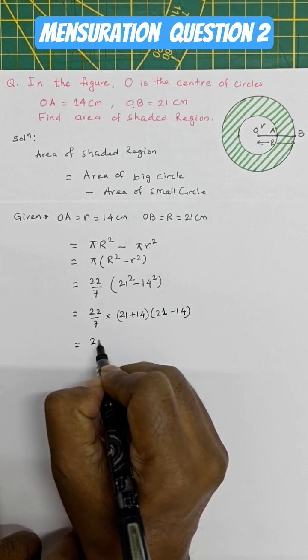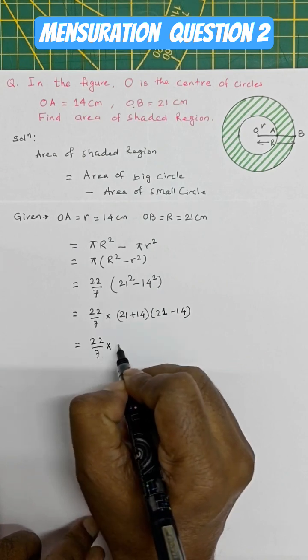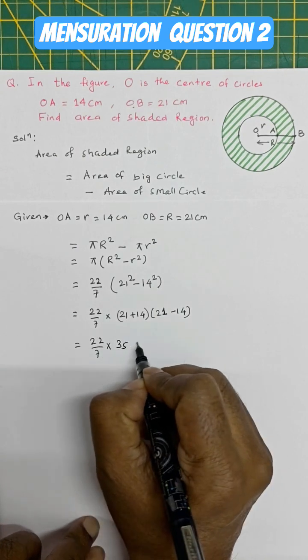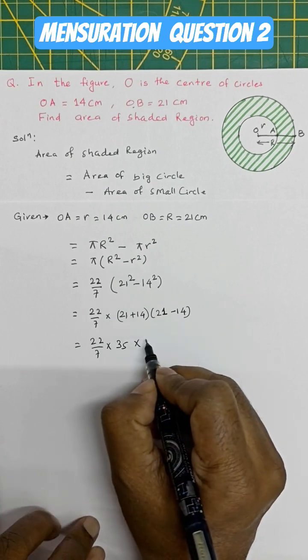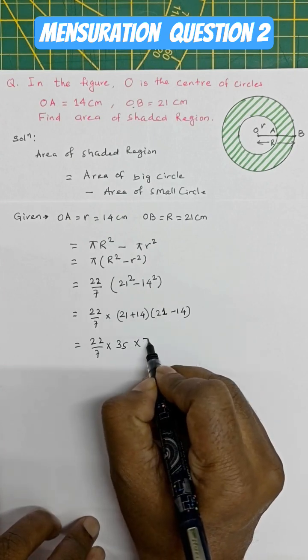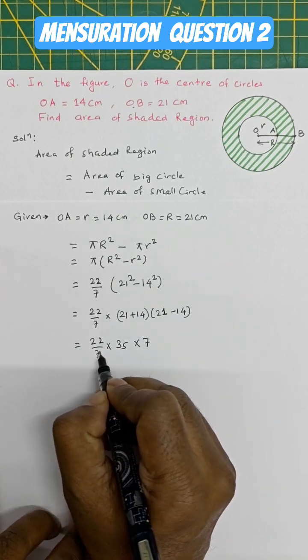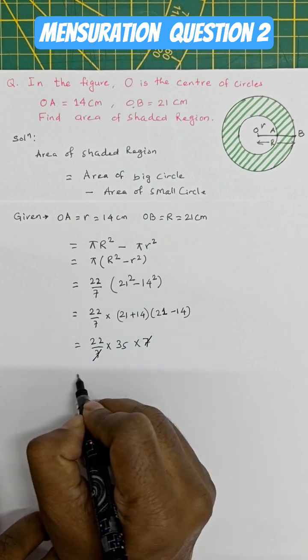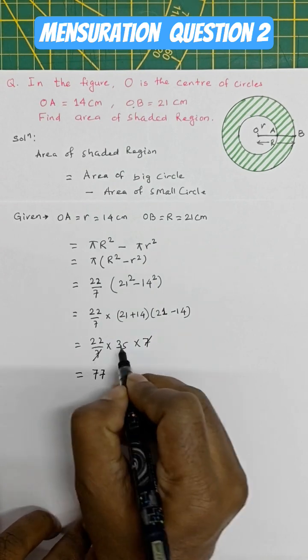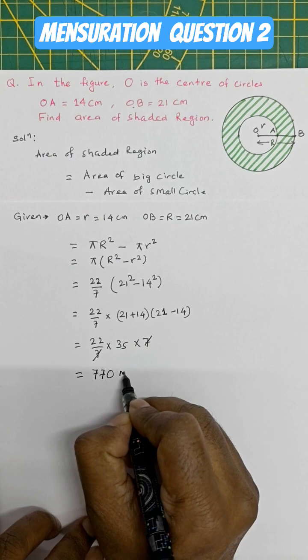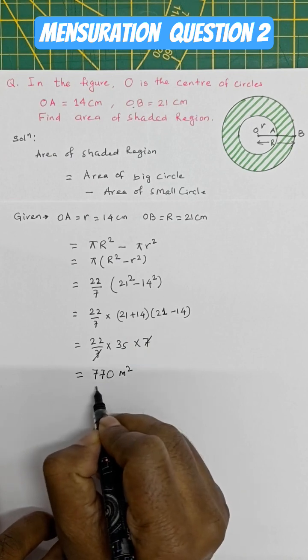So 22 by 7 into 35 into 7. So 7, 7 cancel, then 770 meter square. So the answer is 770 meter square.